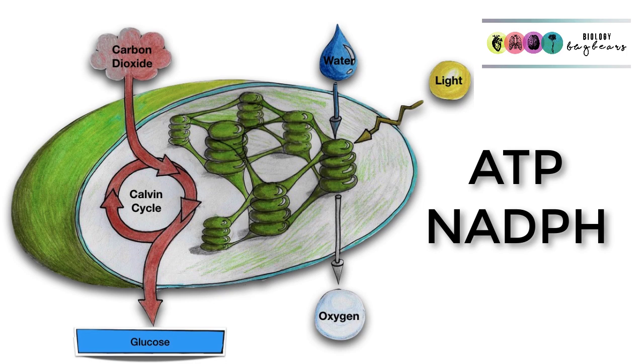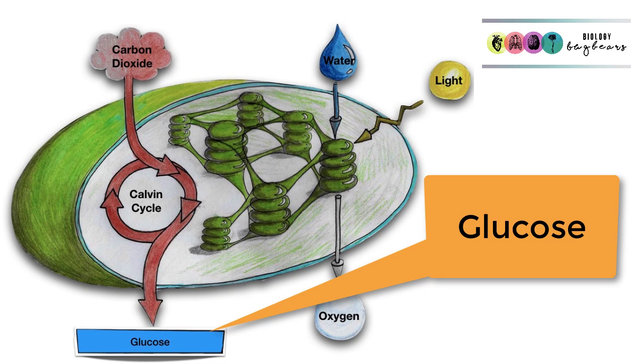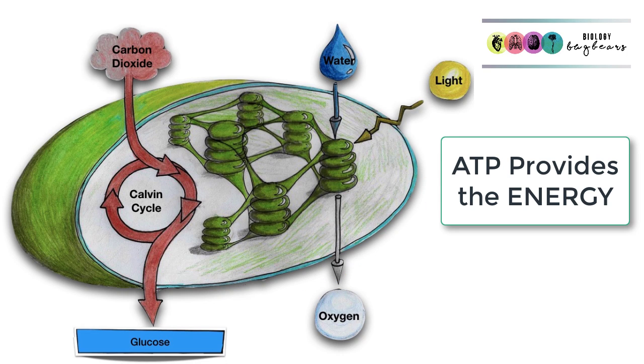ATP and NADPH. NADPH is going to bring electrons and protons, which will then combine with the carbon dioxide to produce glucose. All of the reactions are fueled by the breakdown of ATP.